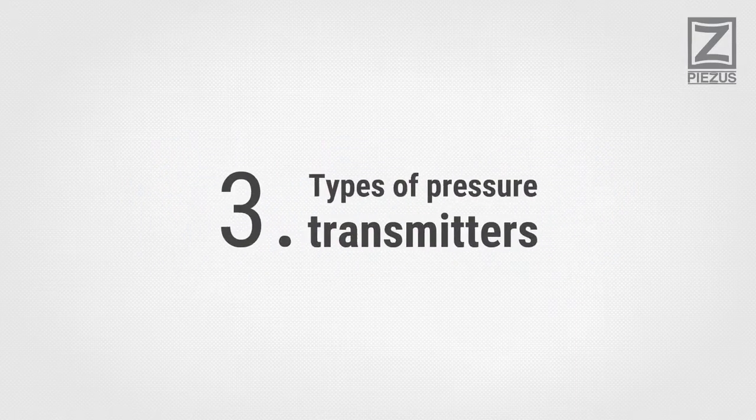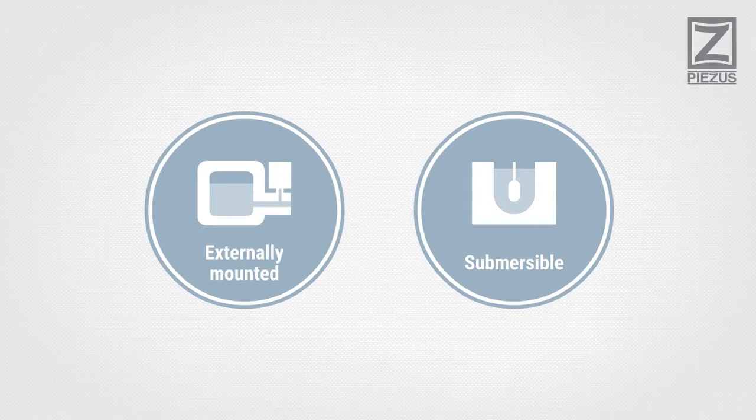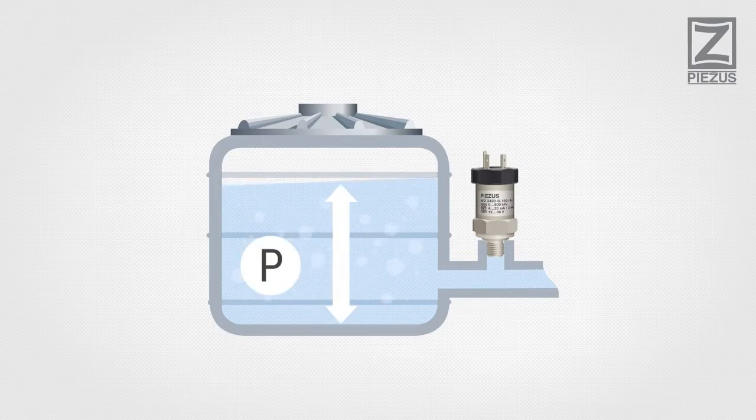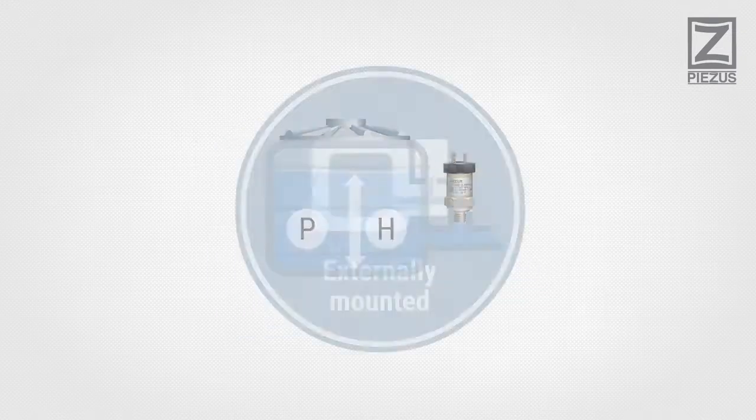3. Types of Pressure Transmitters. There are two most popular types of pressure transmitters: externally mounted and submersible. Externally mounted pressure transmitters are used for measuring pressure and level of liquids and gases and usually have a thread or a flange mount.